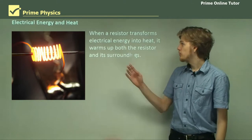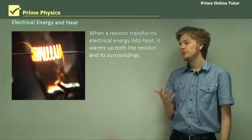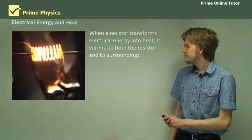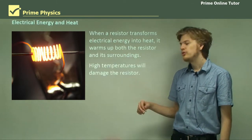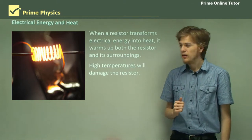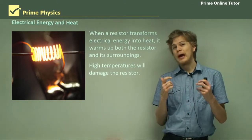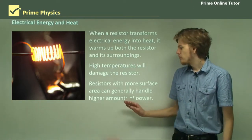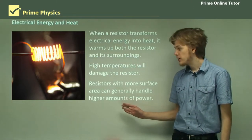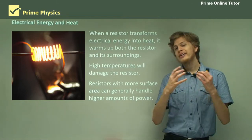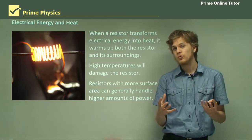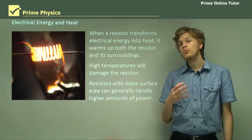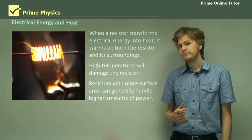Now, when a resistor transforms electrical energy into heat, it warms up. It gets hotter. So high temperatures will damage the resistor, which means we don't want the power through it to be extremely large. Of course, resistors with a very high surface area are able to radiate a lot of heat away from themselves quite quickly. And so, if they have larger surface areas, they can generally withstand higher temperatures.